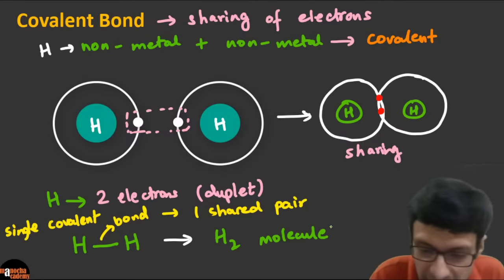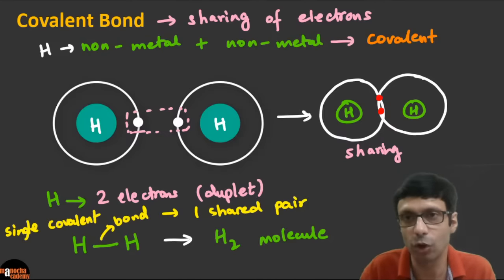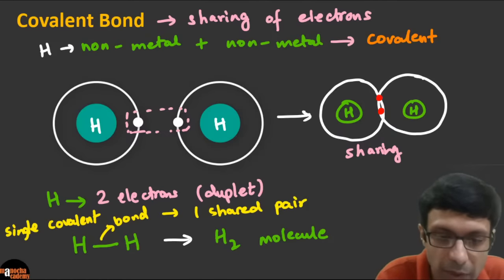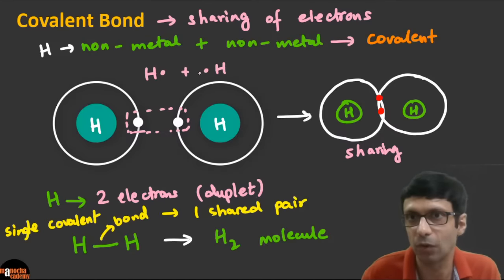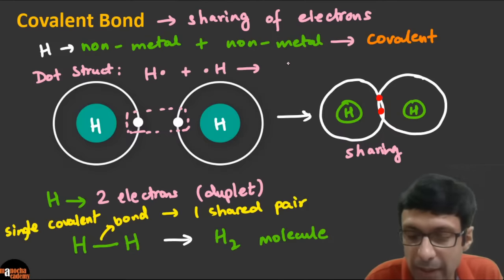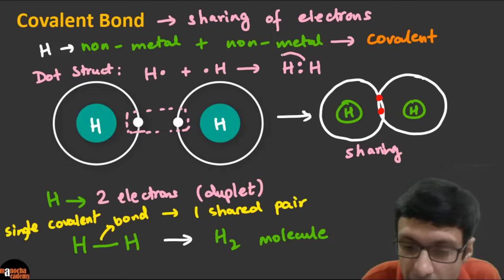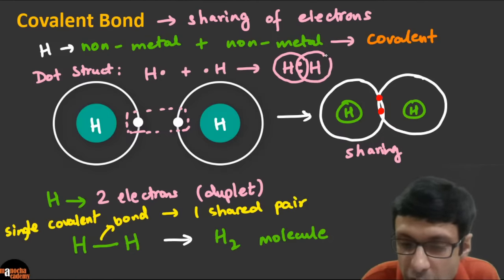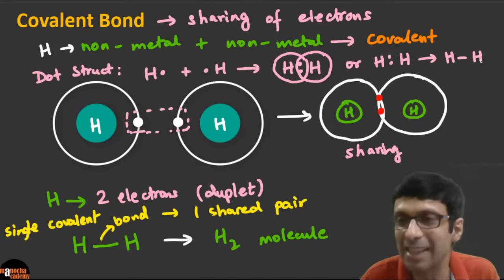The electron dot structure of H₂: draw H with one dot and another H with one dot, then show them combining with the electrons placed in the center to show sharing. You can draw circles to verify the duplet rule is satisfied. This single shared pair gives us a single covalent bond. This is our hydrogen covalent bond with a single covalent bond.